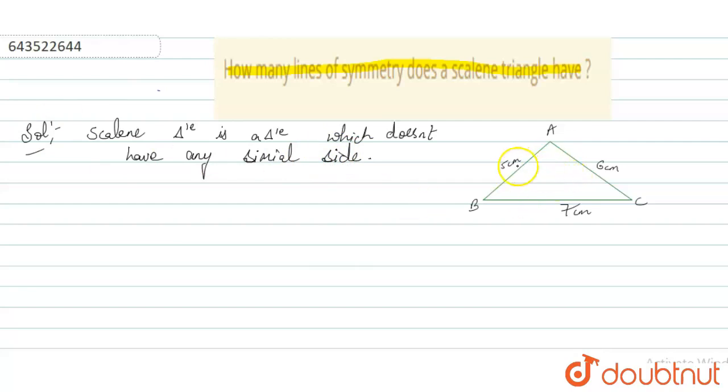So as all the sides are of different measure, it cannot have a single symmetry line, fine? So it does not have any symmetry line which can divide it into equal parts.